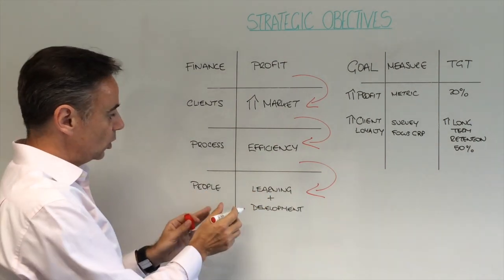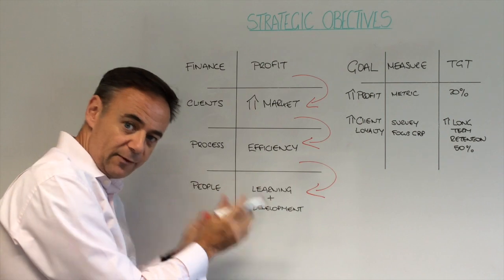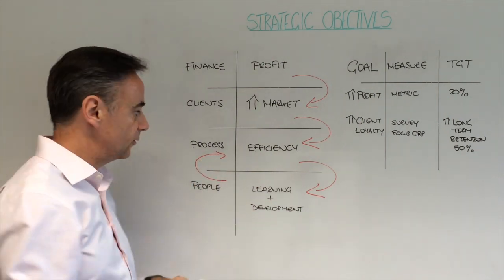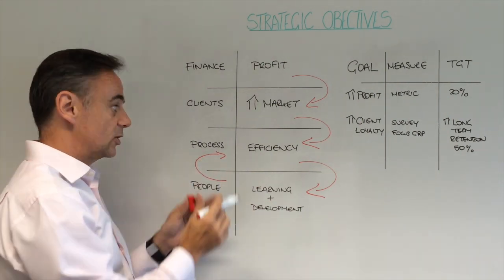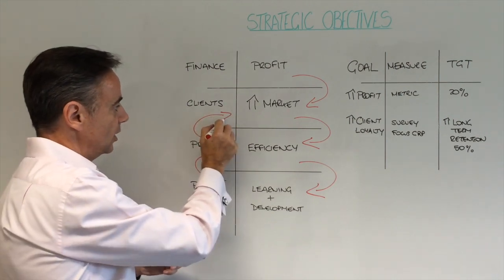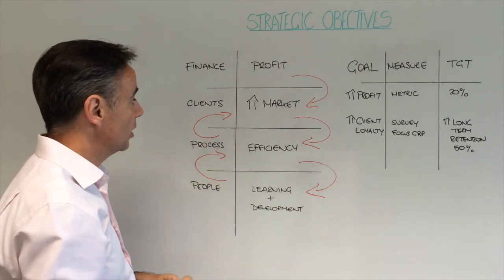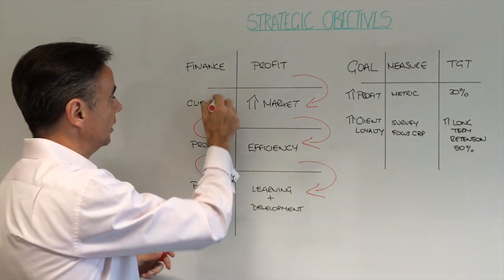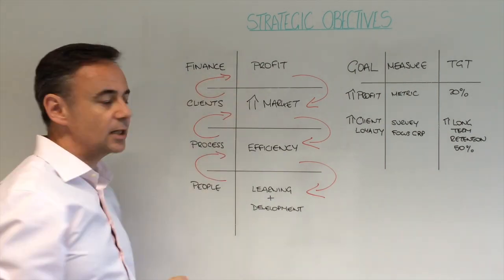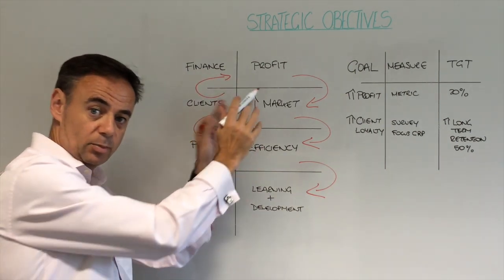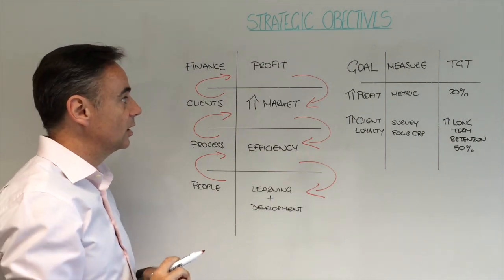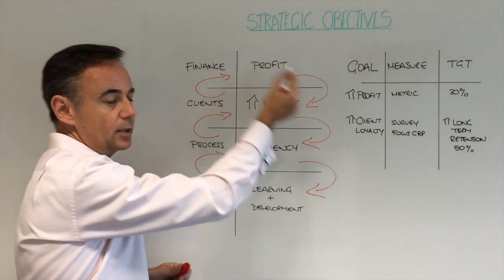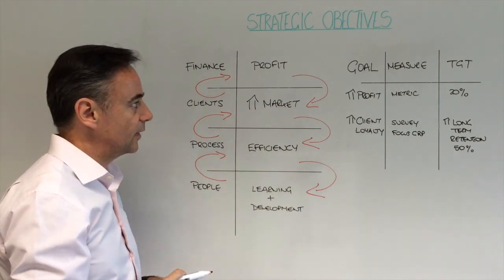Similarly, what we've got to ensure is that the right people in place are building the right processes, which then supports our clients' needs in the marketplace. And if they're valuing what we're doing in the market, then obviously that increases the profit margins and profit lines of where we're going. So really, that is looking at things in a far more holistic fashion.